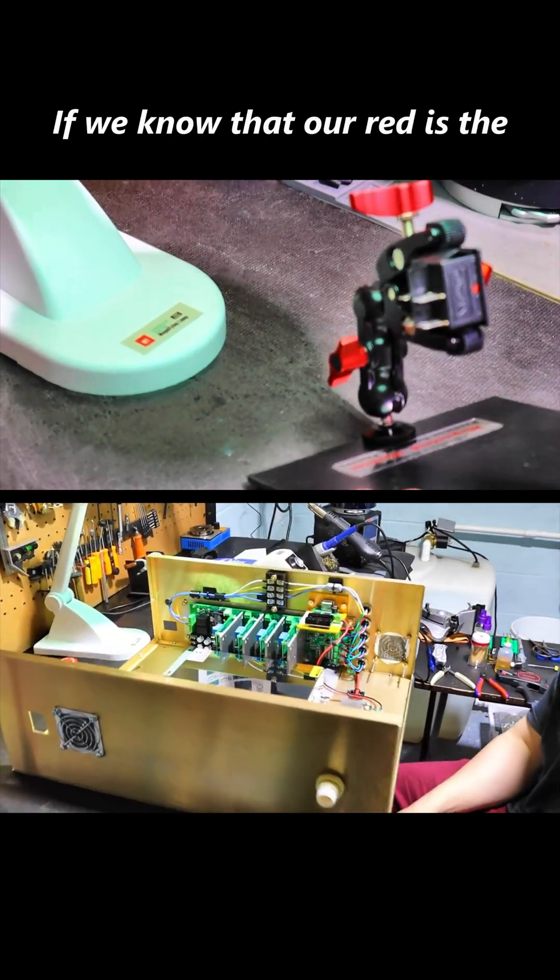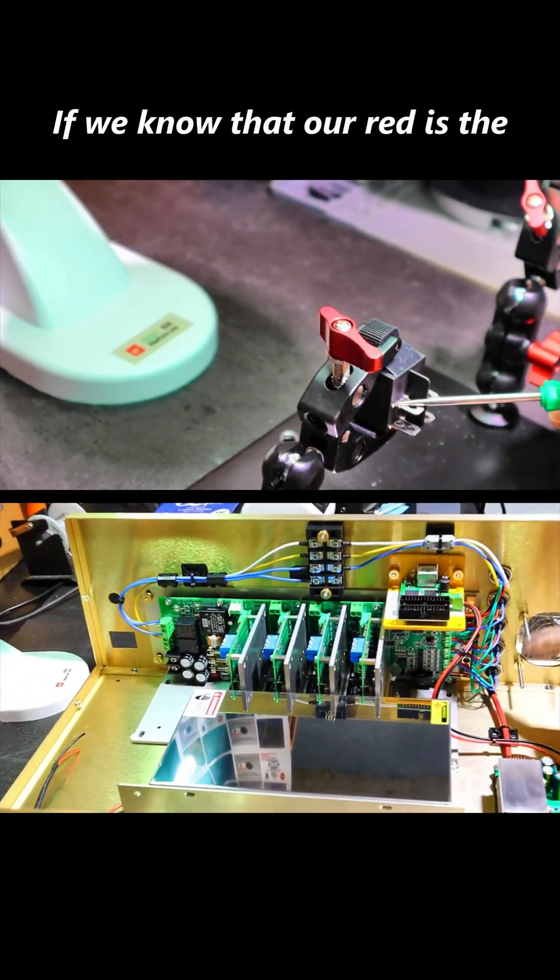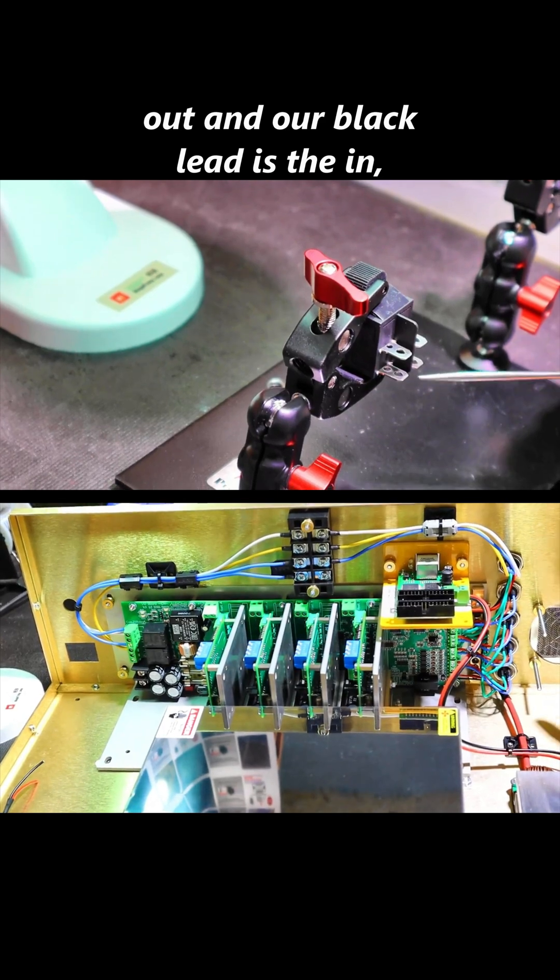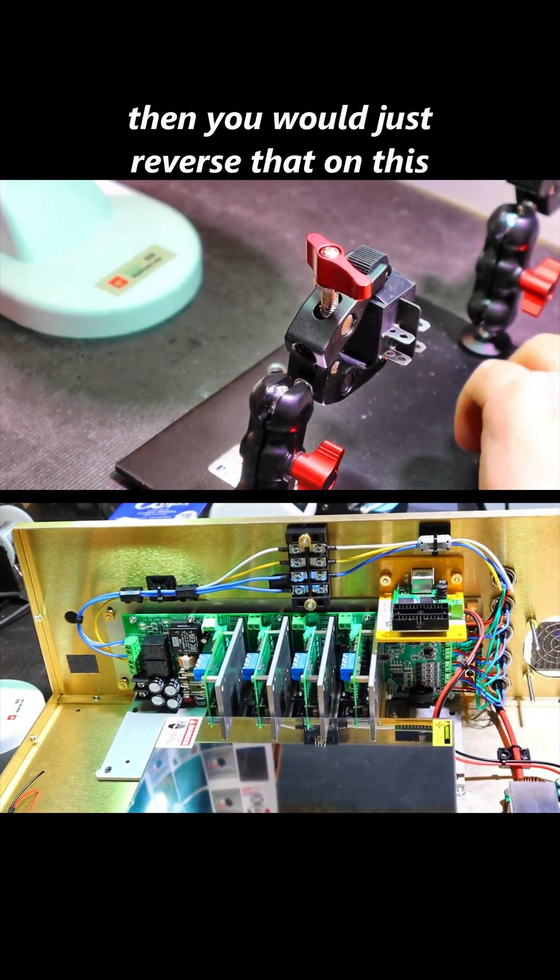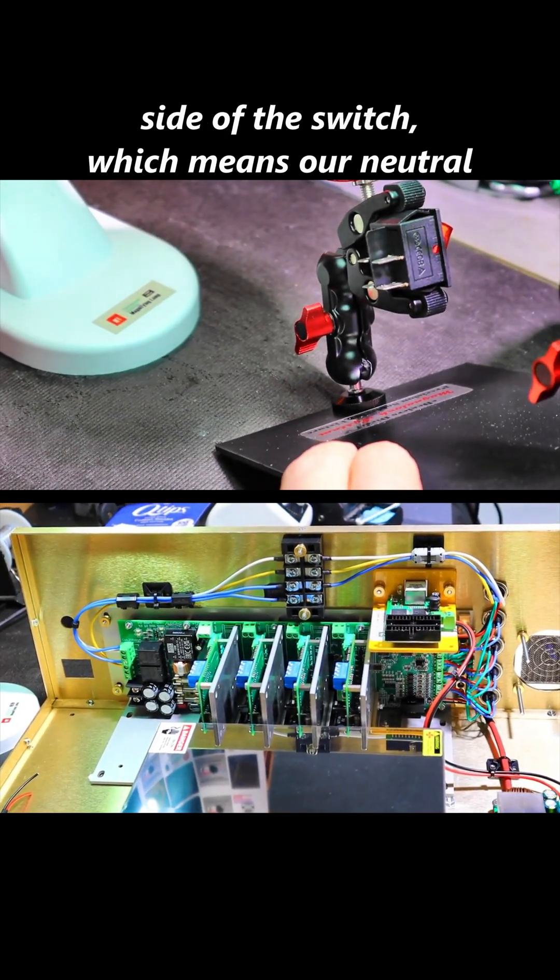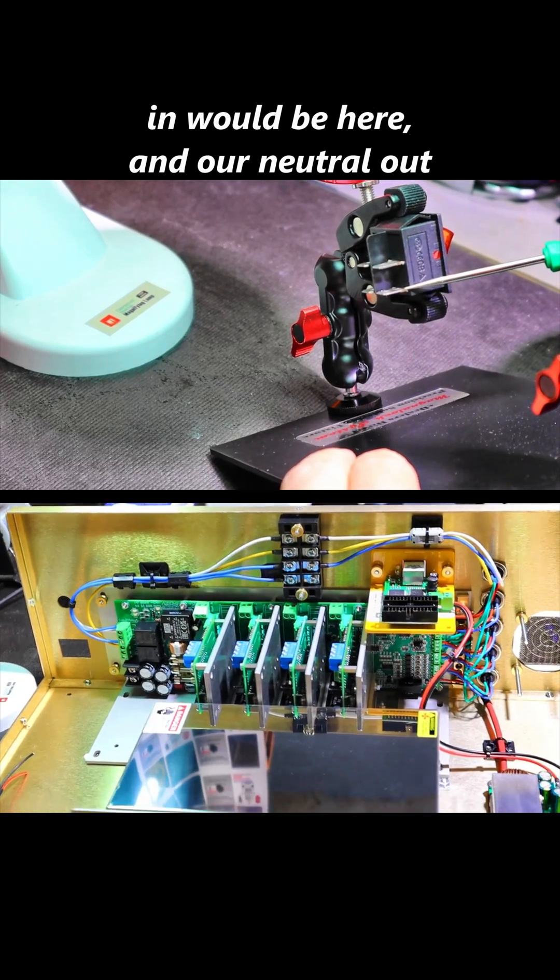If we know that our red is the output and our black lead is the input, then you would just reverse that on this side of the switch, which means our neutral in would be here and our neutral out would be here.